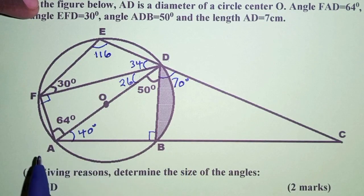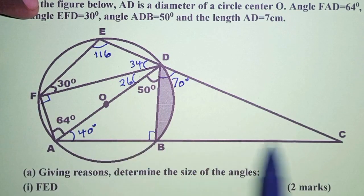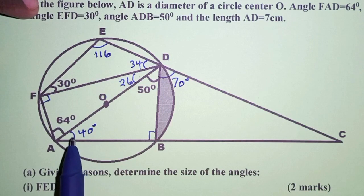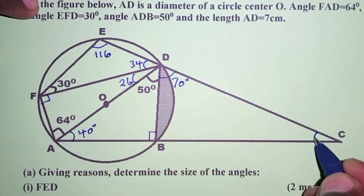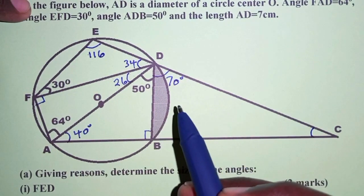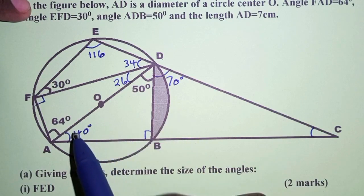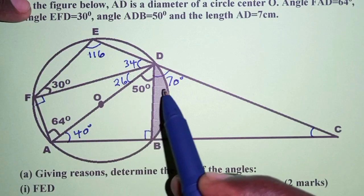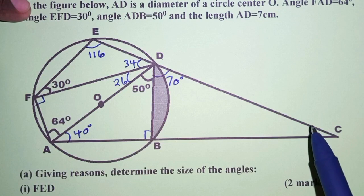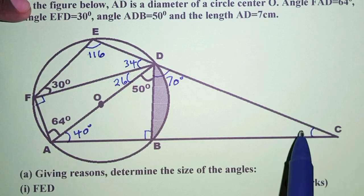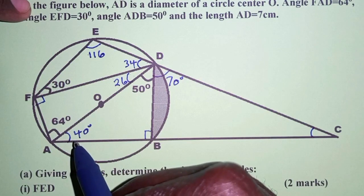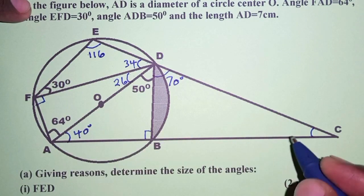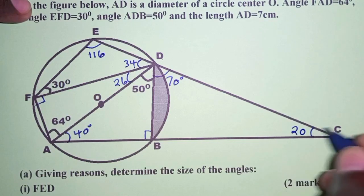Let us also consider triangle ACD — the bigger triangle. The angles of a triangle add up to 180 degrees. We have 40, 50, and 70, and use those to find the missing angle at C. So 40 plus 50 plus 70 plus angle C equals 180. That gives 160, and 180 minus 160 equals 20 degrees for the angle at C.